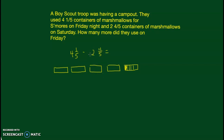I need to take away two and four-fifths of those containers. So I'm going to start with the whole number two and get rid of two of those containers. I'm left with two containers and one-fifth. Now I need to take away four-fifths, but I only have one-fifth here, so in order to take away four-fifths I have to take one more of the whole containers and separate that into fifths.